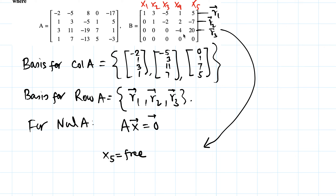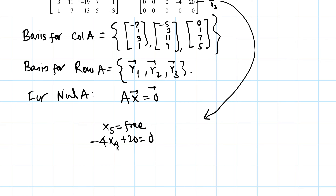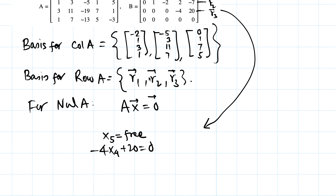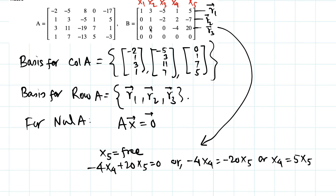From the last non-trivial row of B: -4·x4 + 20·x5 = 0, so -4·x4 = -20·x5. The negatives cancel and dividing by 4 gives x4 = 5·x5.